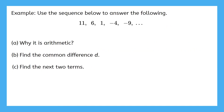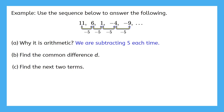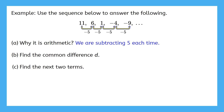Let's do an example. Use the sequence below to answer the following. First, why is it arithmetic? Let's start by looking at the pattern — how are the numbers changing this time? We're subtracting 5 this time, so that is why this sequence is arithmetic. Now, what's the common difference? Remember, the common difference is the number being added, but we're subtracting. Also remember, subtraction is really just adding a negative number. So what number are we adding? If we're subtracting 5, then we're adding negative 5. That is our value for the common difference, d.